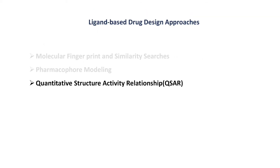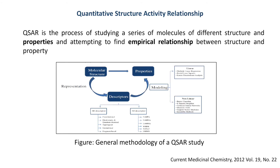Coming to the third method of ligand-based drug discovery, which is quantitative structure-activity relationship or QSAR. As the name suggests, this method correlates molecular structures with biological properties. QSAR methods are based on the assumption that the structure of a molecule must contain the features responsible for its physical, chemical, or biological activities. It is defined as a process that quantitatively correlates structural or molecular properties, called descriptors, with functions like physicochemical properties, biological activities, and toxicity. The general QSAR workflow includes a collection of active and inactive compounds, generation of molecular descriptors describing physicochemical or structural properties, and then generation of a model identifying the relationship between the descriptors and experimental activity.